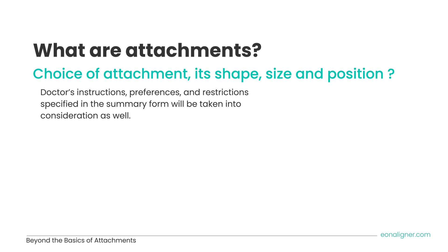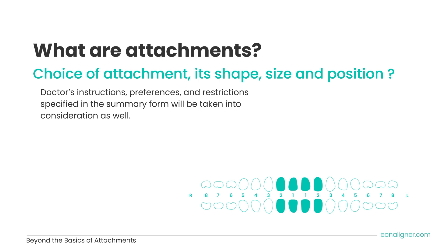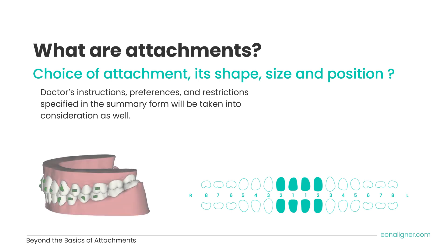The attachment choice also takes into consideration the shape and size of the tooth, as well as any interferences that might result. When submitting a case, a special section is available to specify attachment restrictions, as shown in the tooth chart. Press on any specific tooth and its color will turn blue to indicate attachment restriction. Attachments will be indicated in the virtual 3D plan video as green-colored extensions on the tooth.